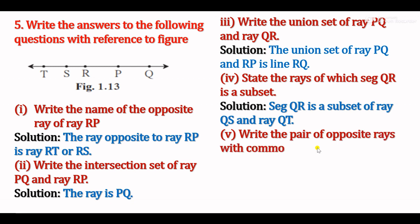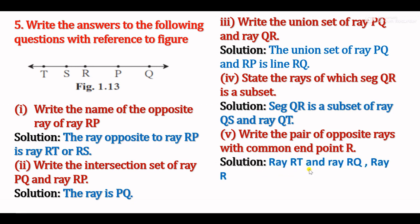Sub-question 5: Write the pair of opposite rays with common endpoint R. Opposite rays start from R in opposite directions. From R, one side gives ray RP or ray RQ, and the other side gives ray RS or ray RT. The pairs are: ray RP and ray RS, and ray RQ and ray RT. In the answer, write ray RT and ray RQ, and ray RS and ray RP — both pairs have common endpoint R.